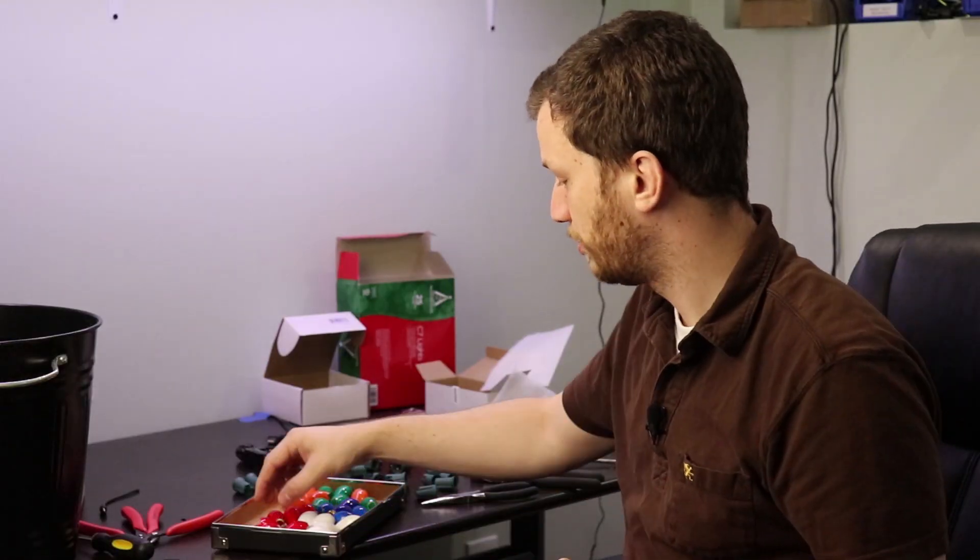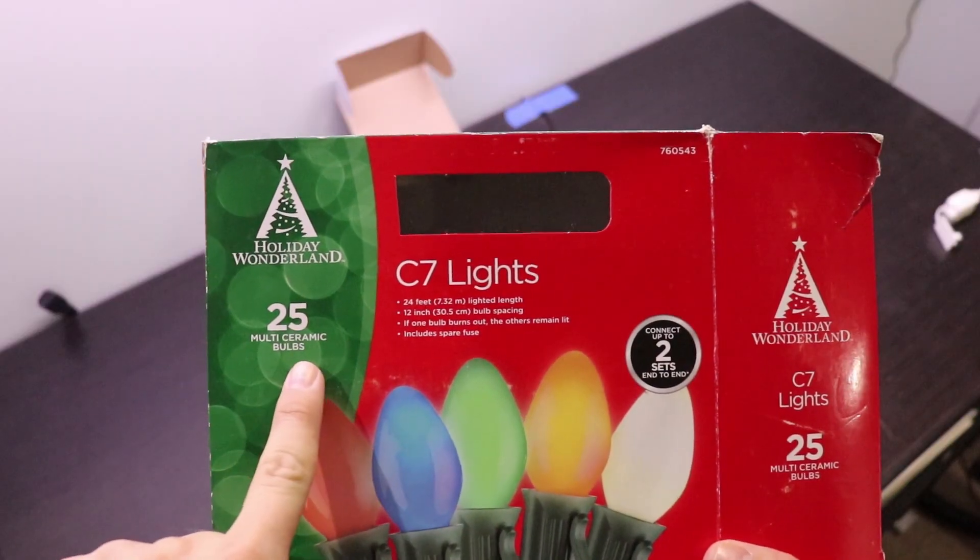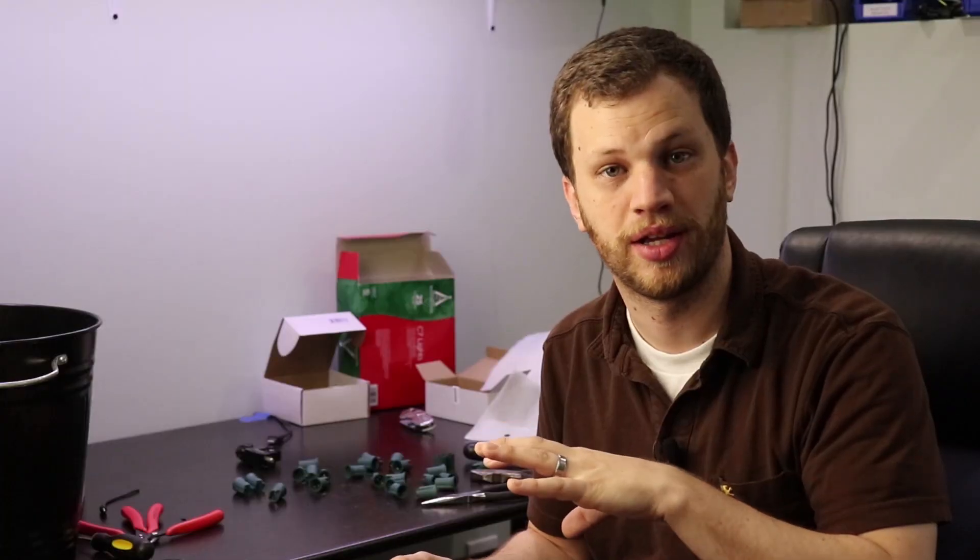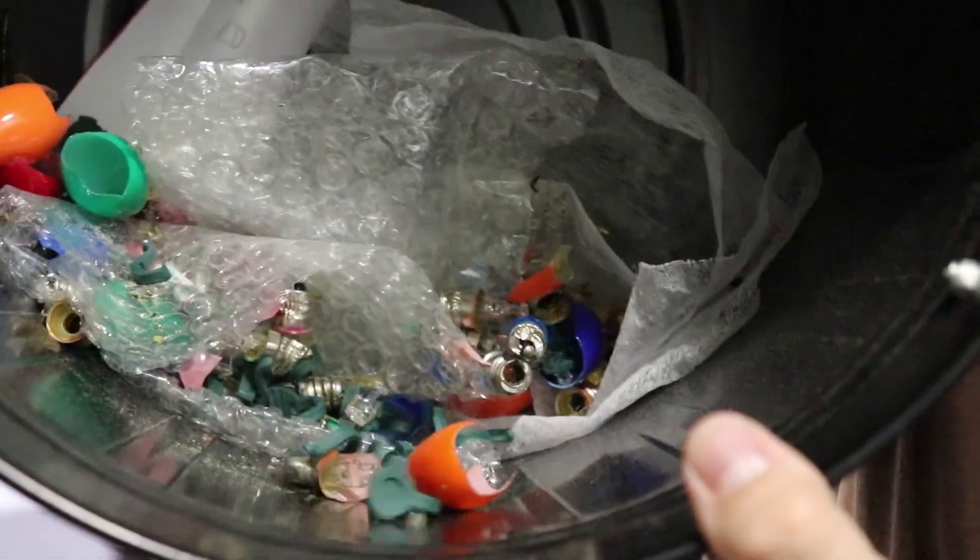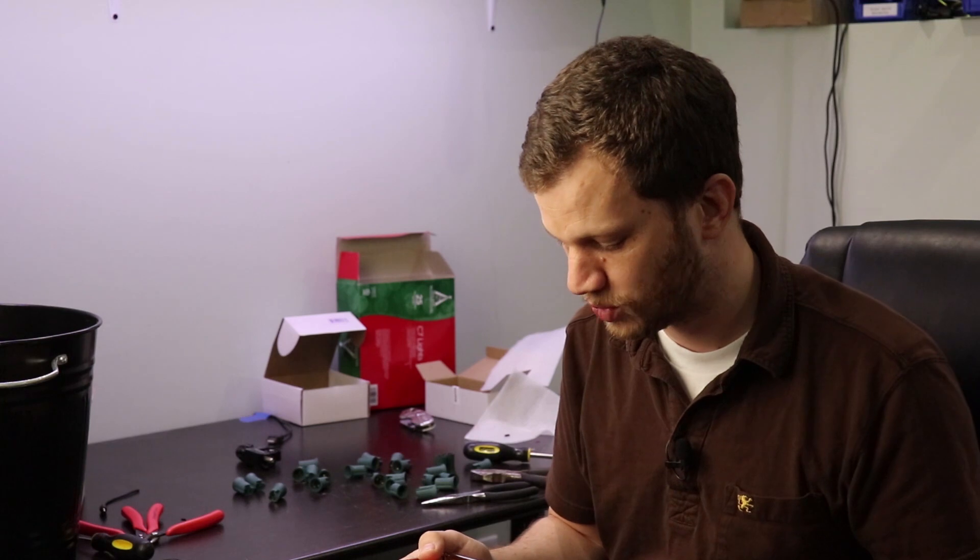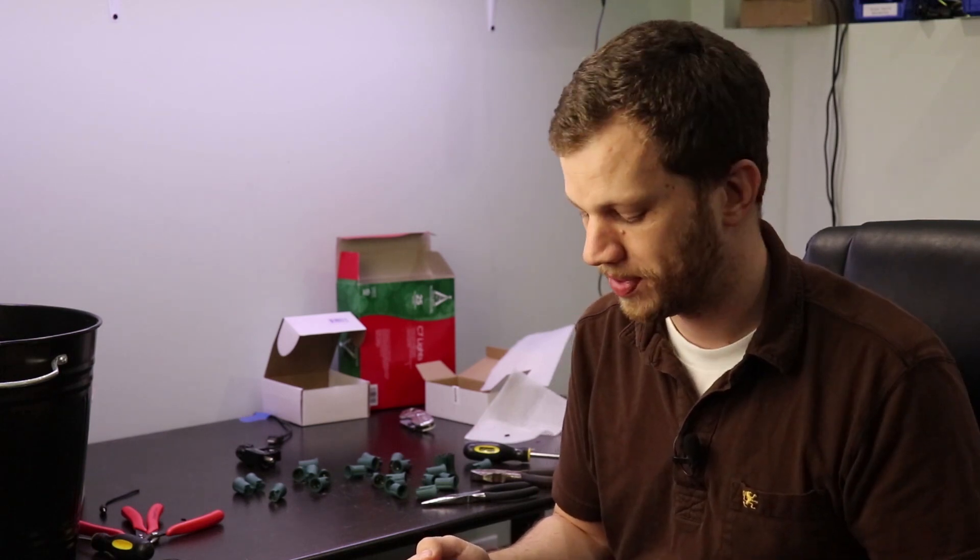So I finished cracking all the light bulbs open and hollowing them out. The string of lights that I bought had 25 bulbs already on them and I went ahead and bought another 25 replacement bulbs. So I basically had a yield of 50%. I ended up breaking about half of them in the process of opening them up. But I think I've got enough here. I need 26 and I think I have at least 27, 28 so I've got a couple extra.